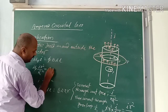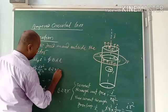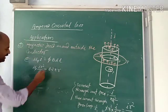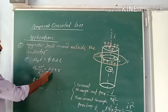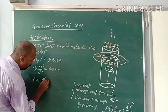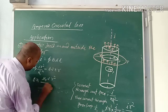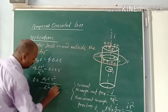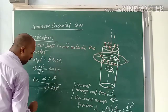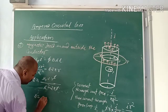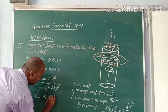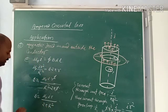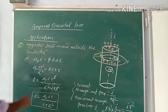Therefore, solving for B: B = μ₀Ir² / (R² × 2πr) = μ₀Ir / 2πR². This is the magnetic field inside the conductor at distance r from the center, where r is less than the radius R of the conductor.